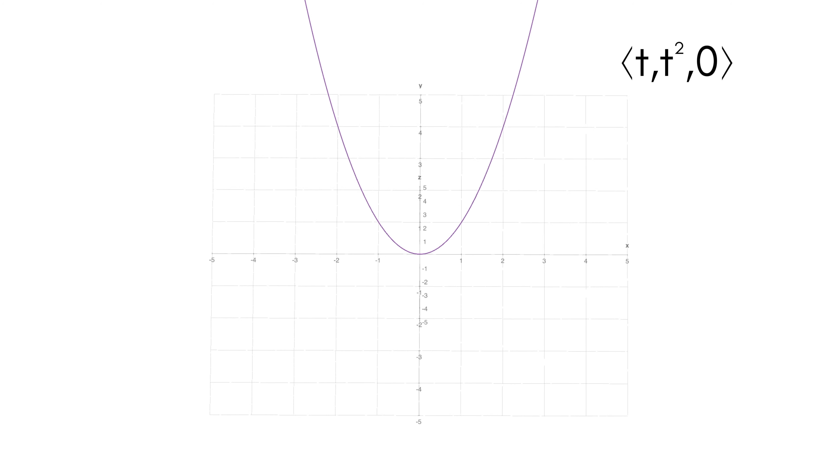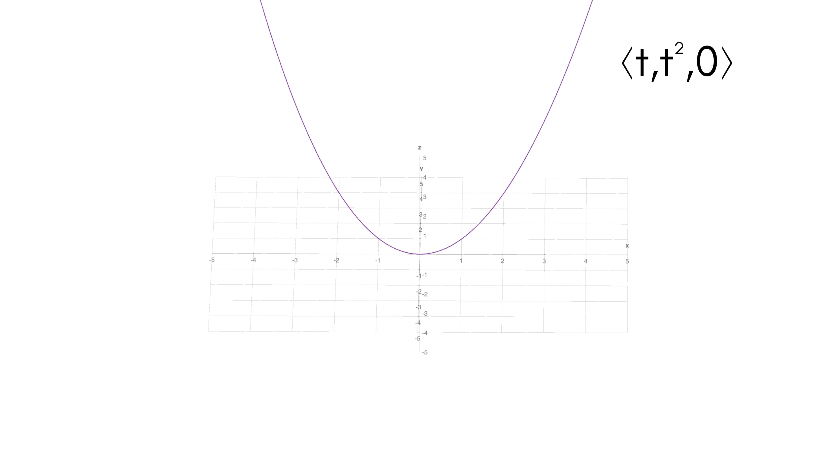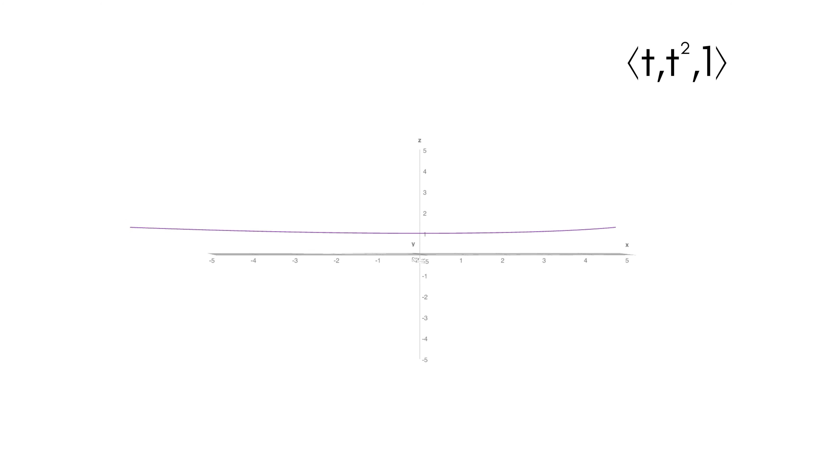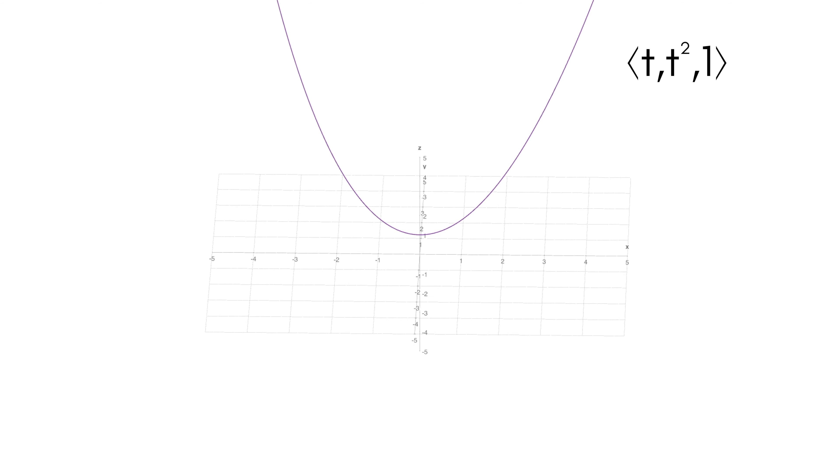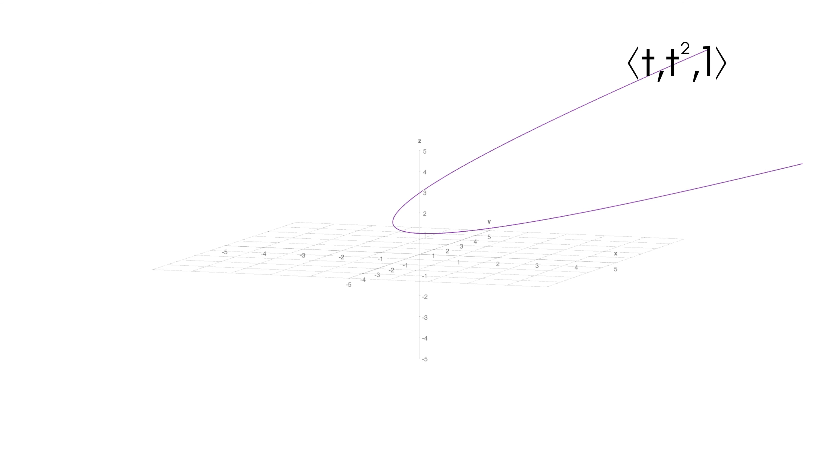Then I can sort of adjust what we do in the z component to change what's happening. So here with zero as z, it's just sitting on the xy plane. There's no z height. But if I increase z to just be one, then we're up at one, we're sort of floating there. I can go two, three, etc. And I can raise this parabola-like shape by changing the value of z.